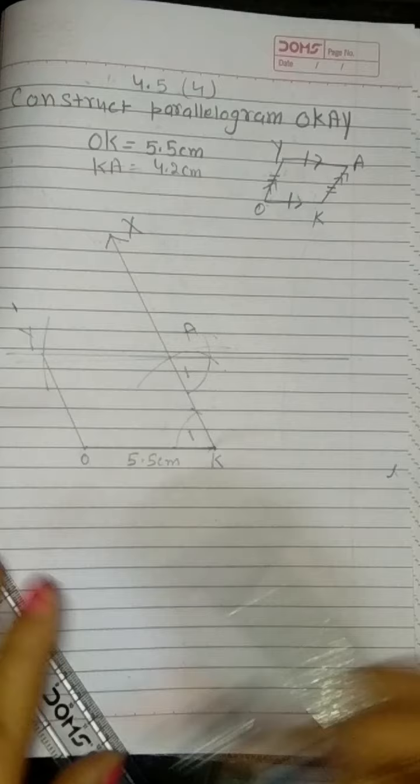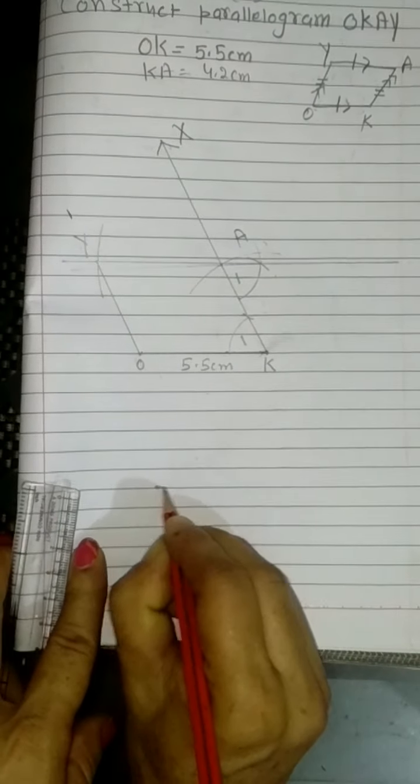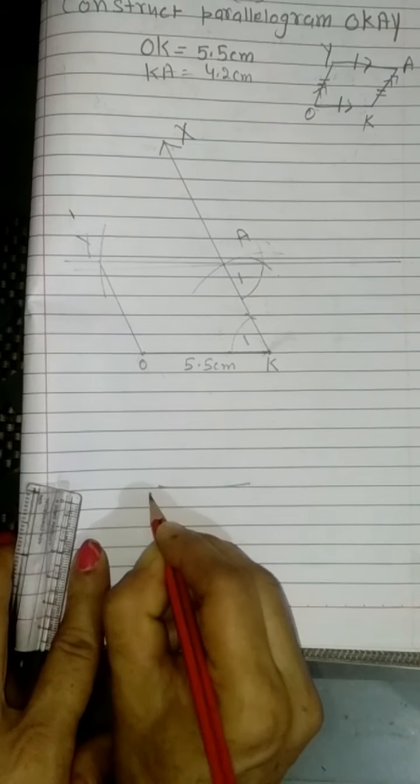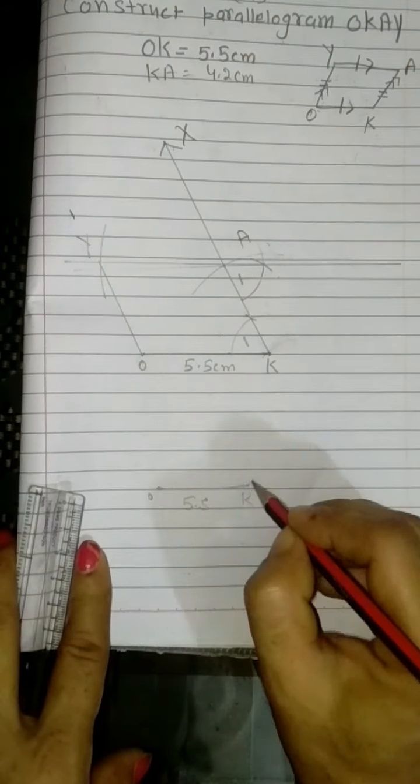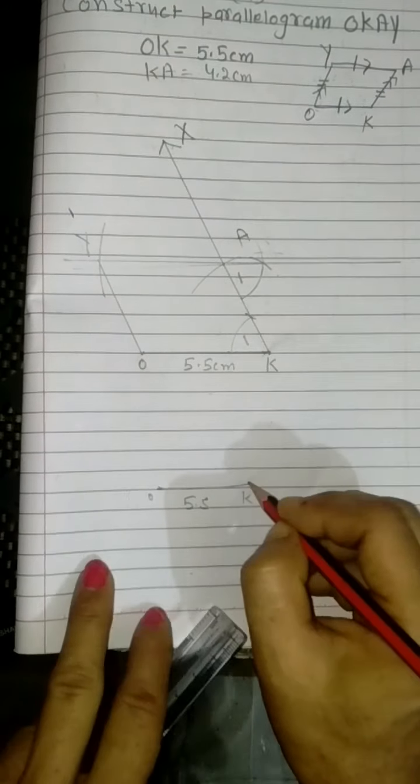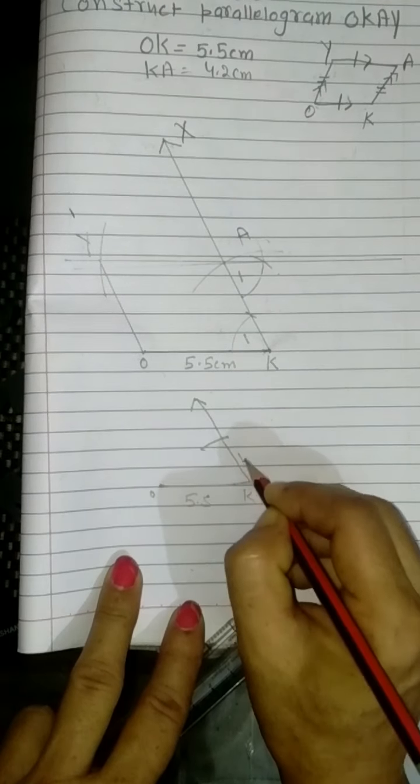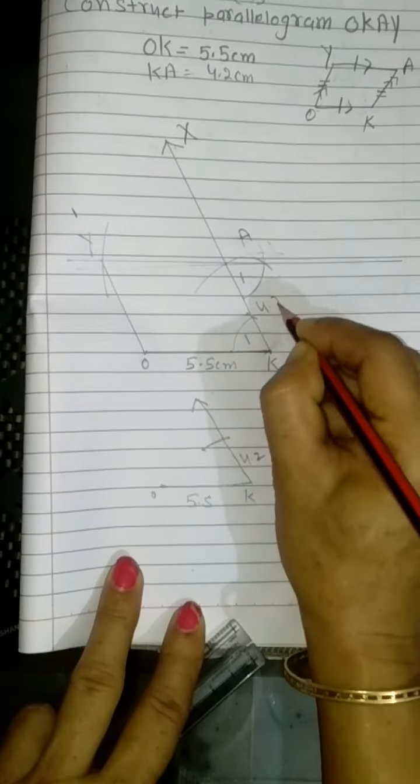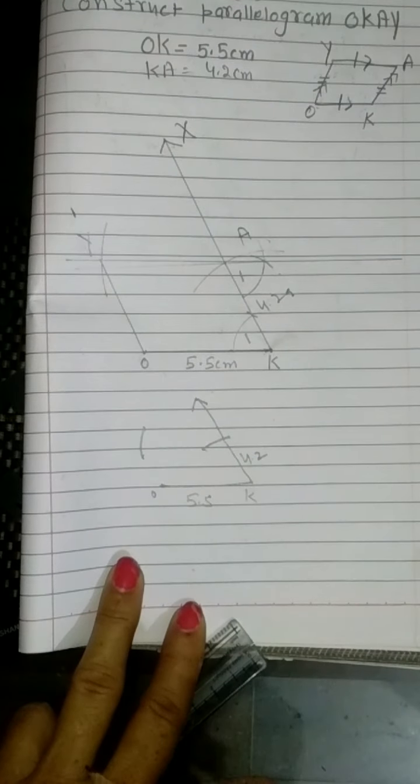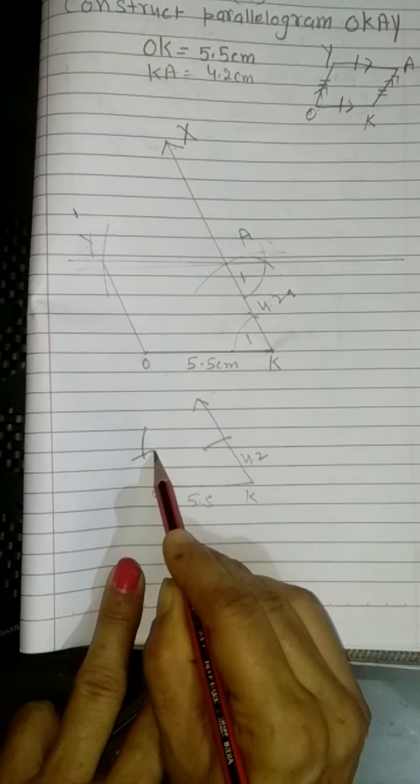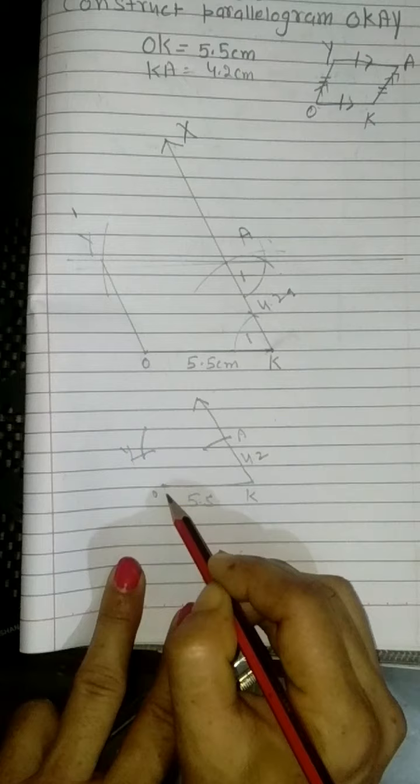Our students can draw it this way simply: Draw OK as 5.5. Someone can draw a 60 degree angle, or directly take any ray. Cut it 4.2 cm, then from here draw another arc of 5.5 cm, then from here draw an arc of 4.2 cm. I get the point Y. Join this.